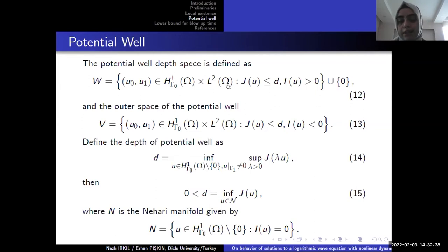The other space is V. And we can say we use this space for the blow-up results. Then we define the depth of potential well as d and d is derived with the potential functional lambda(U).